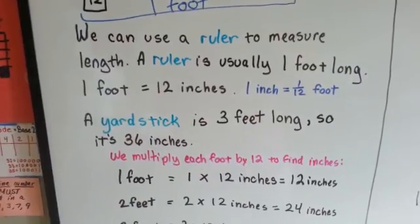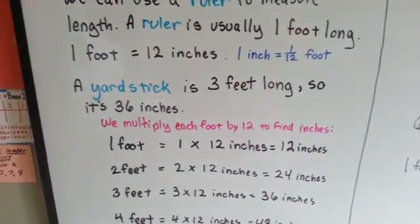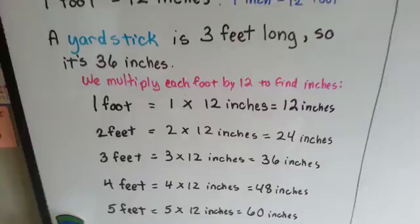A yardstick is three feet long, so it's 36 inches. We multiply each foot by 12 to find the inches.